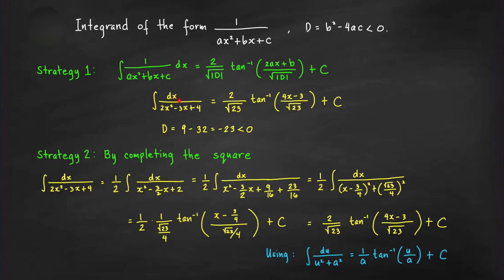For example, integrate dx over (2x² − 3x + 4). The discriminant is 9 − 32 = −23, which is less than 0. Applying the formula directly gives (2/√23) · arctan((4x − 3)/√23) + C — the fastest way to evaluate this integral.